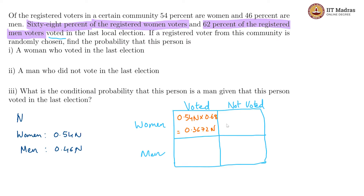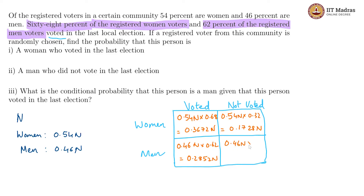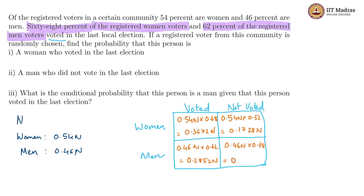Of the 0.54n, the remaining 32 percent have not voted, so that would be 0.54n times 0.32, which gives us 0.1728n. For men we have similar logic: of the 0.46n, 62 percent — that is 0.62 — have voted, giving us 0.2852n. The remaining 38 percent would be 0.46n times 0.38, which is equal to 0.1748n.